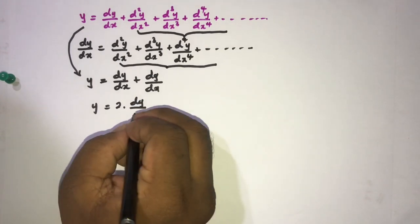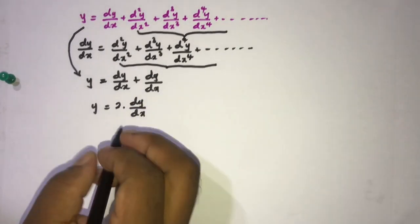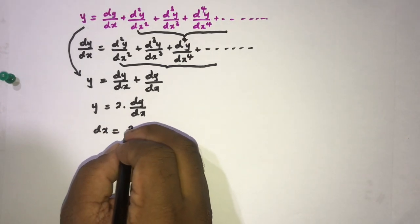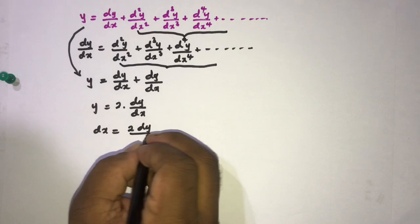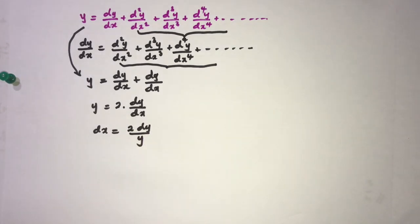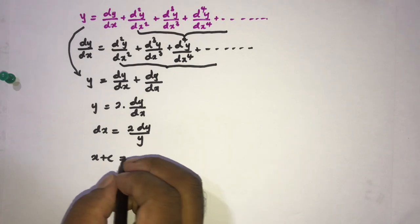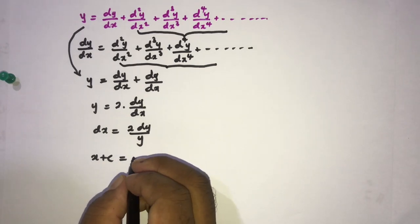Now we can isolate the dx, so dx is equal to two times dy over y. Now if we integrate this, we have x plus c is equal to two times natural log of y.